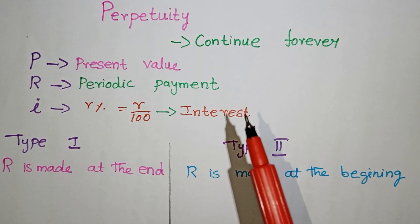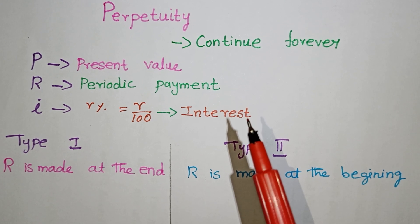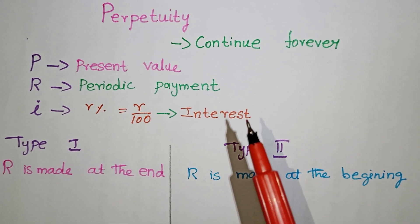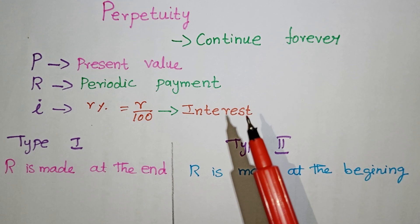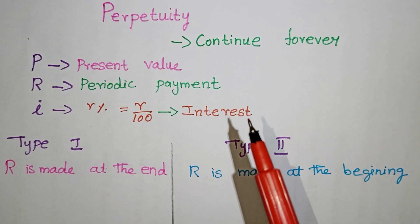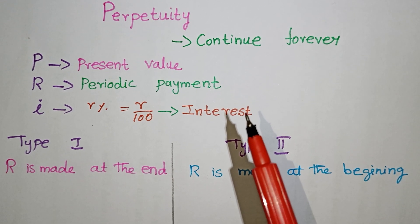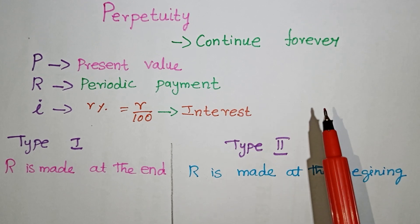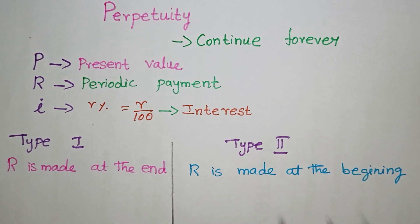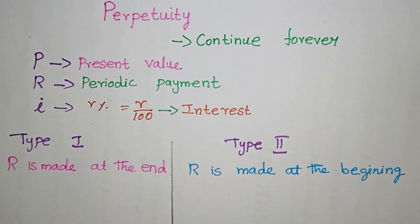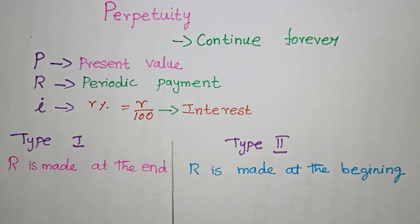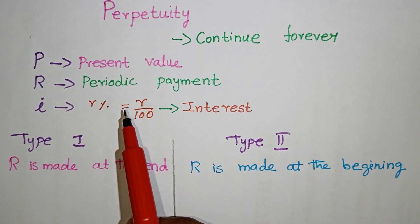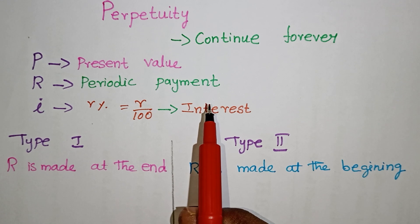If you have shares in the share market from a company, you will receive returns continuously — that is Perpetuity. If you have a rented house, the rental income continues. Perpetuity means the perpetual payment is the rental amount, continuing forever.